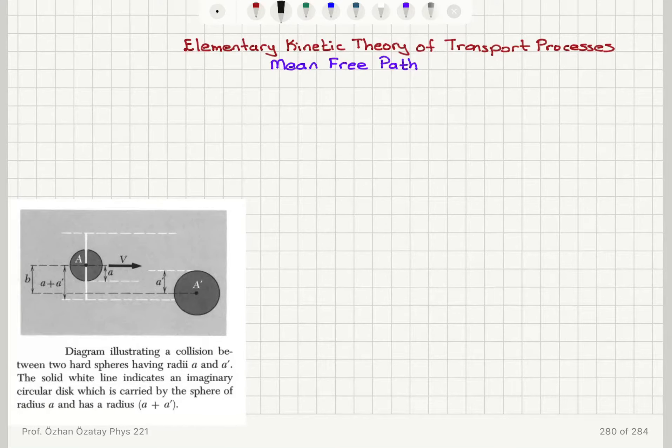So far we have only discussed the equilibrium properties of systems. Now we're going to take a look at an elementary kinetic theory of transport processes, which is basically describing what is happening in a non-equilibrium situation. Without being rigorous, we're doing an elementary theory.